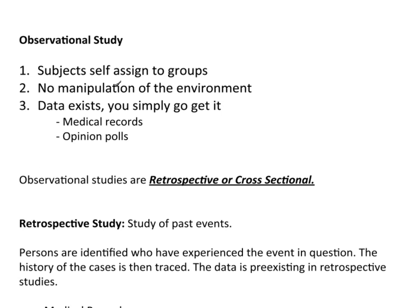In an observational study, subjects self-assign themselves to groups. We don't manipulate the environment — the key is that data already exists and you're simply going out to get it, perhaps pulling data from medical records. By self-assigning to groups: for example, when studying the effect of smoking, we're not going to grab 100 people and tell 50 of them to smoke 10 packs a day. Instead, the person assigns themselves to their own group by their own actions — they're self-assigned as a result of what they do.